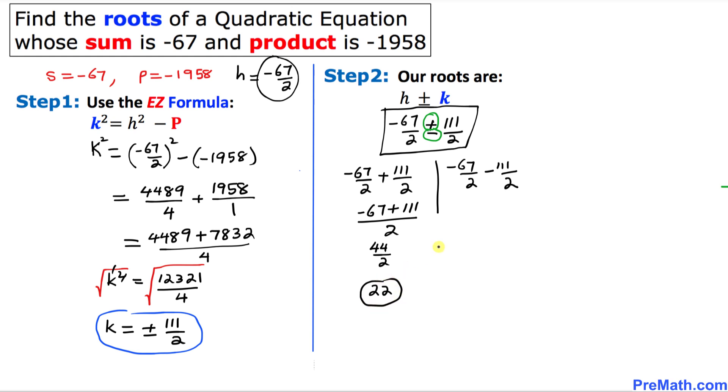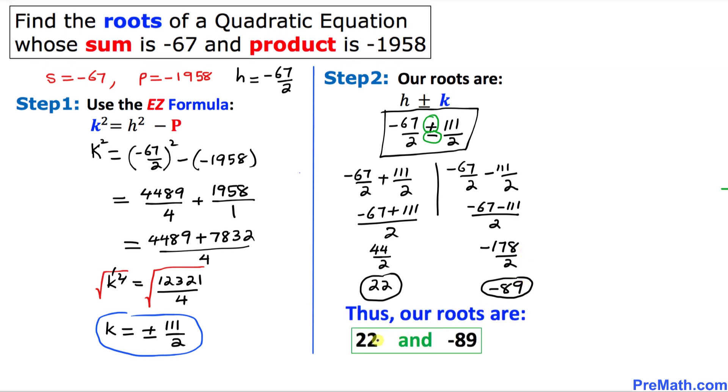And on the right hand side, now let's do likewise, 2 is going to be denominator, negative 67 minus 111 on the top. If we simplify that one, that is going to give us negative 178 divided by 2. So that means negative 89 is going to be our second root. So that's how our roots turn out to be 22 and negative 89.